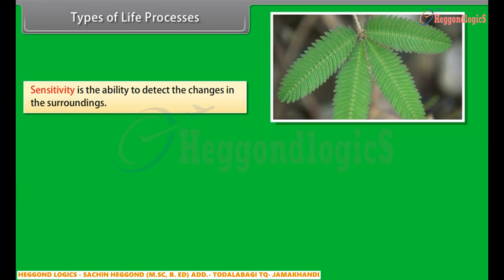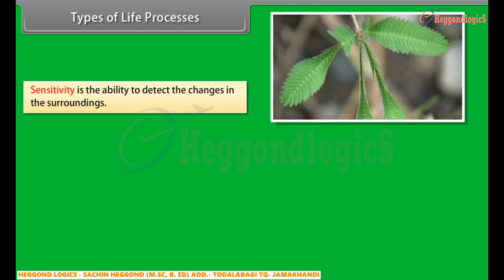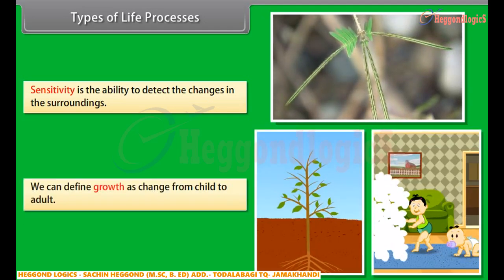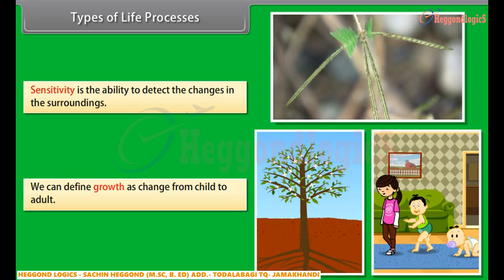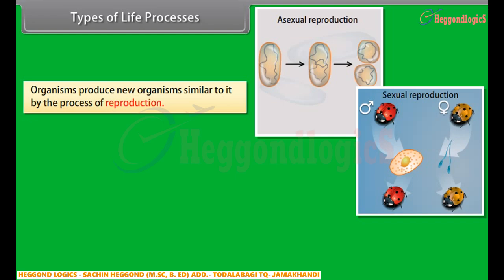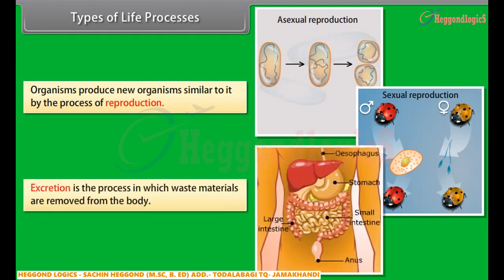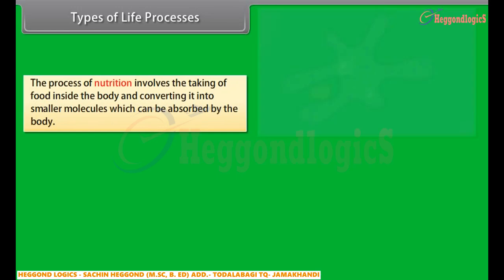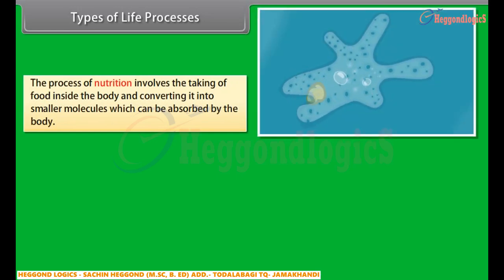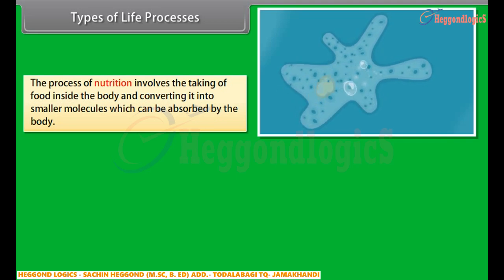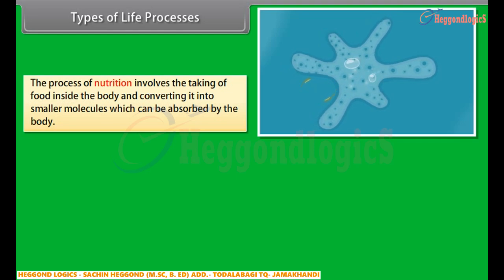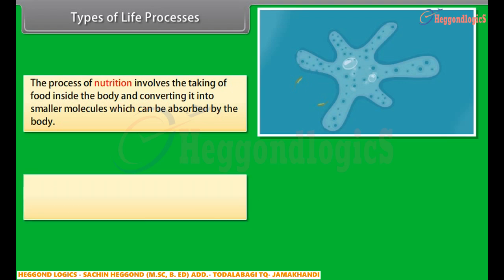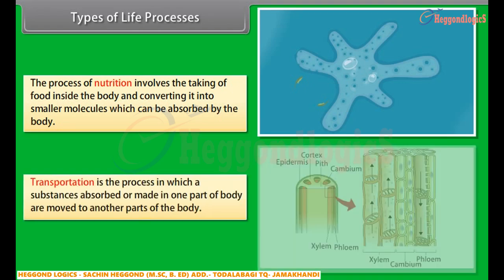Sensitivity is the ability to detect changes in the surroundings. Growth can be defined as the change from child to adult. Organisms produce new organisms similar to themselves by the process of reproduction. Excretion is the process in which waste materials are removed from the body. The process of nutrition involves taking food inside the body and converting it into smaller molecules which can be absorbed by the body. Transportation is the process in which substances absorbed or made in one part of the body are moved to other parts.